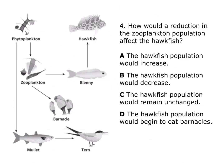Question 4: How would a reduction in the zooplankton population affect the hawkfish? Hawkfish don't directly eat zooplankton, so we follow the line. The blenny are in front of the zooplankton, so they would also decrease. And the hawkfish are in front of the blenny, so they would also decrease. The correct answer is B.